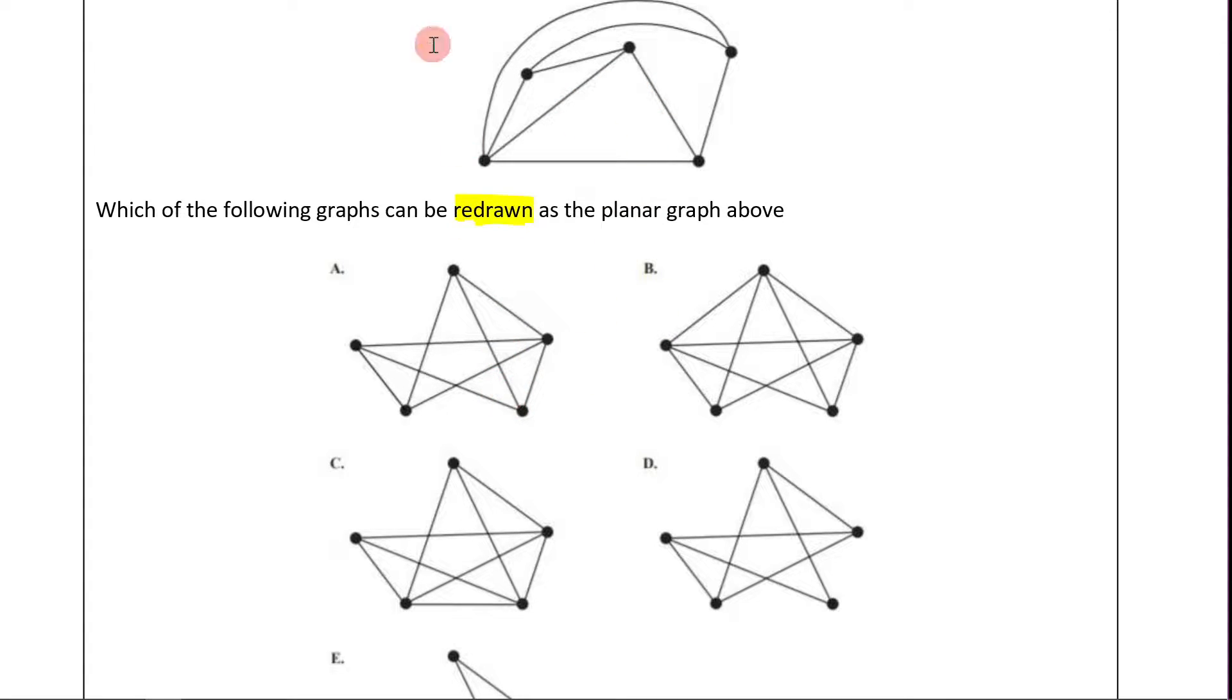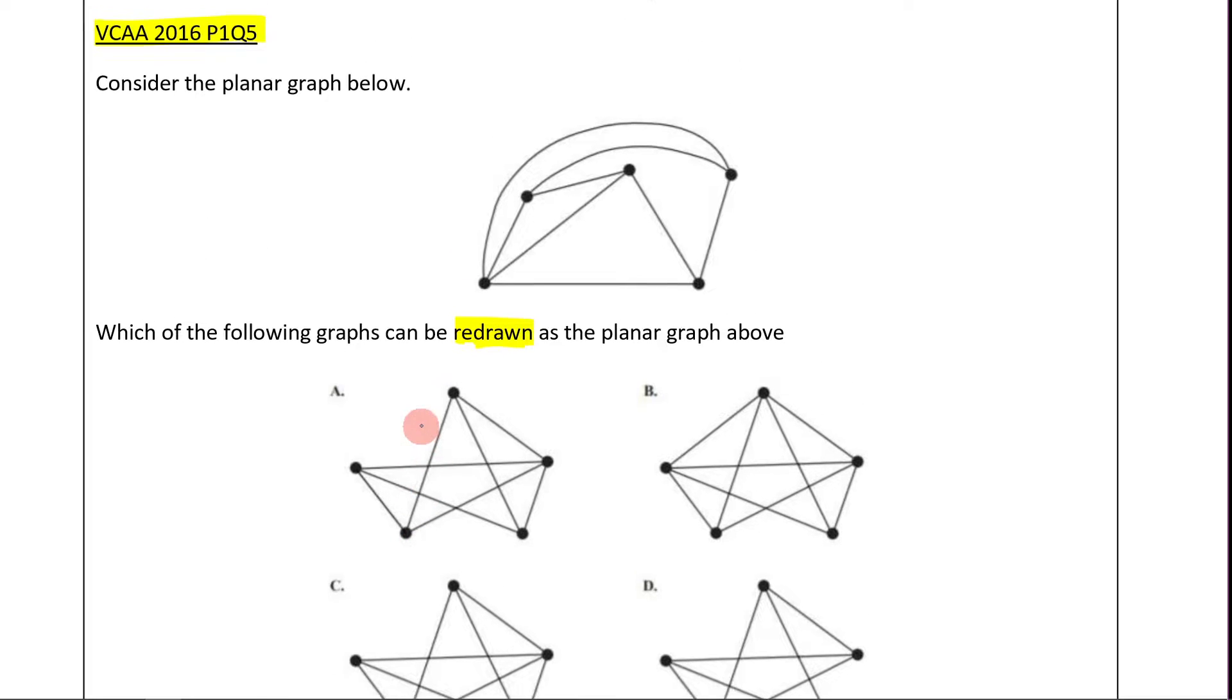So which of these are isomorphic? Remember, what we need to consider is that it needs to have the same edges, the same vertices, and the same amount of connections. So let's talk about the same amount of edges first. Let's actually begin by vertices. Vertices is way easier to check, isn't it?